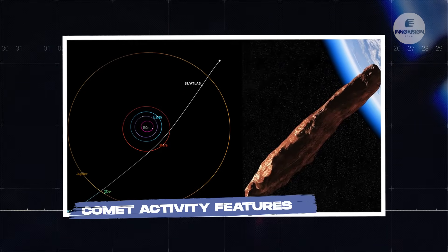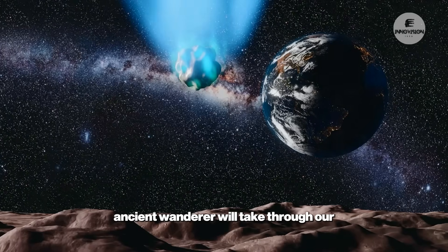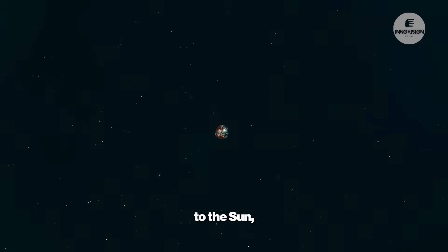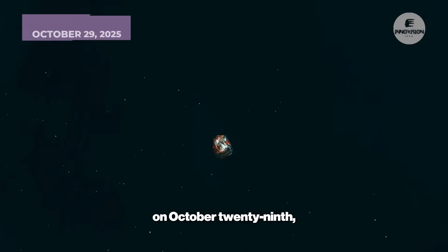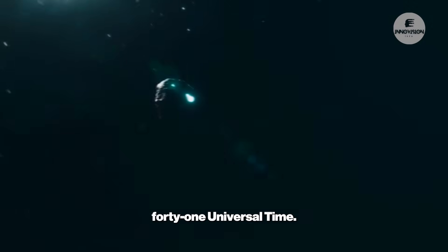Comet Activity Features. Now let's trace the incredible path this ancient wanderer will take through our solar system over the coming months. 3I Atlas will reach its closest approach to the Sun, called perihelion, on October 29th, 2025, at precisely 11:41 Universal Time.